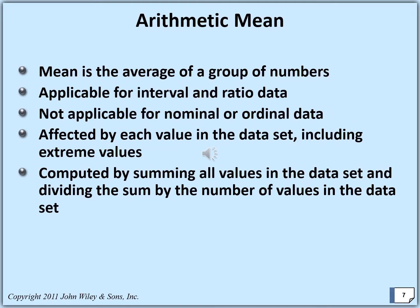Arithmetic mean is the average of grouped data. It is applicable for interval and ratio data, and not applicable for nominal or ordinal data. It is affected by each value in the data set, including extreme values — the values at the tails. It is computed by finding the sum of all values in the data set and dividing that quantity by the number of data points, or number of observations. So, average equals summation of the values divided by n.